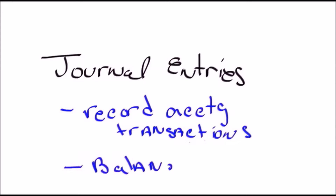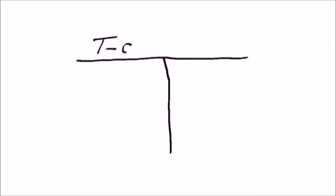Now let's go take a look at the t-accounts that journal entries are in. Journal entries are entered in an item called a t-account. Like the name suggests, t-accounts are drawn like a T. T-accounts just make it easier to visually see what information you're entering. In case you need to analyze the account, it's just easier to see it on a t-account.